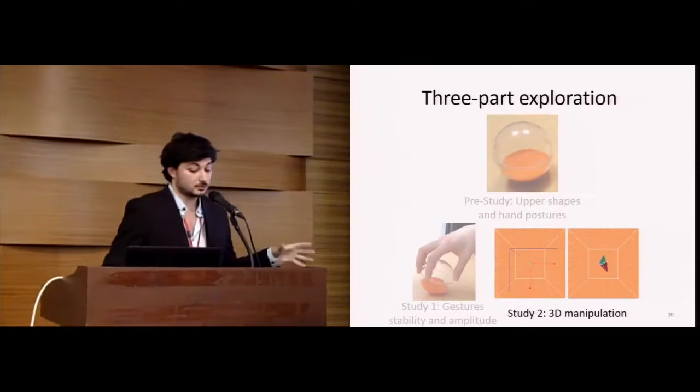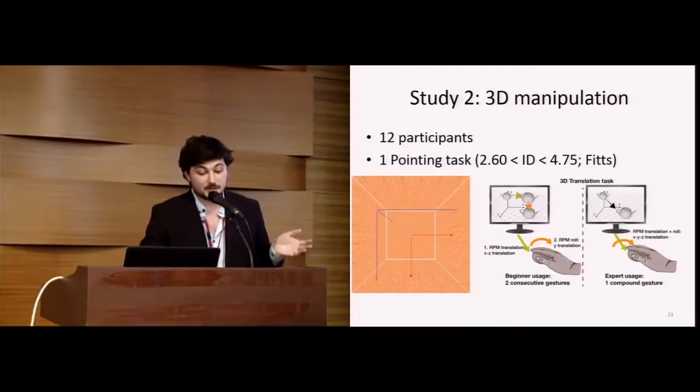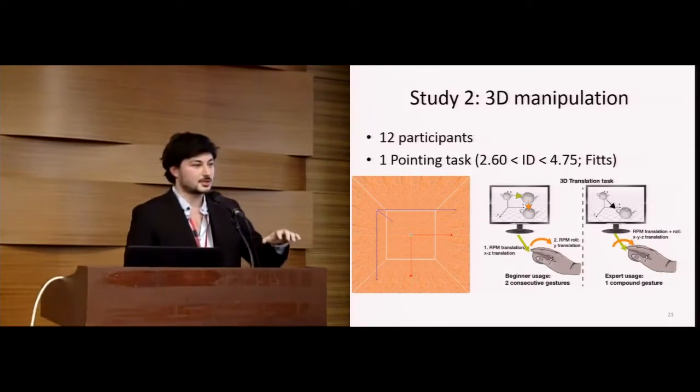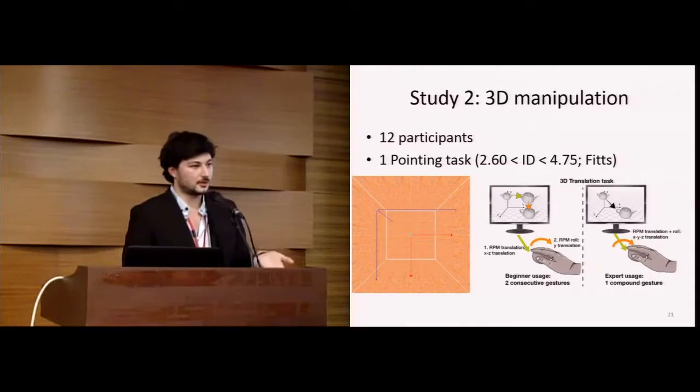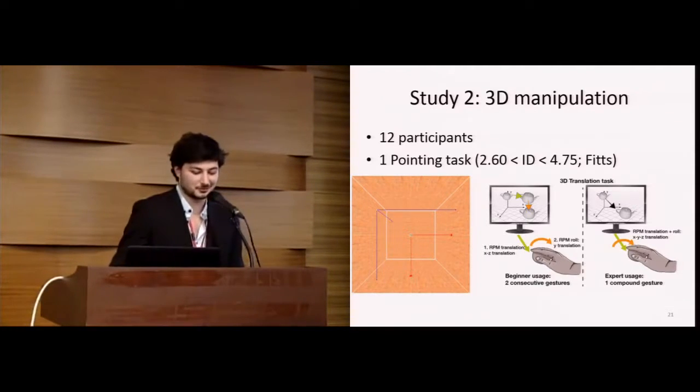Having these results, we wanted to explore its usage in a concrete context of 3D manipulation. We split this experiment into two subtasks: a 3D pointing task and a 3D docking task. In the 3D pointing task, there were 12 participants, all right-handed, and they had to dock a 3D cursor. We designed a specific interaction technique for this experiment, so the user could translate in two dimensions on the experimental surface to perform depth and width translation in the environment. And to change the elevation of the 3D cursor, they had to roll front and back the device. There will be a short video just after.